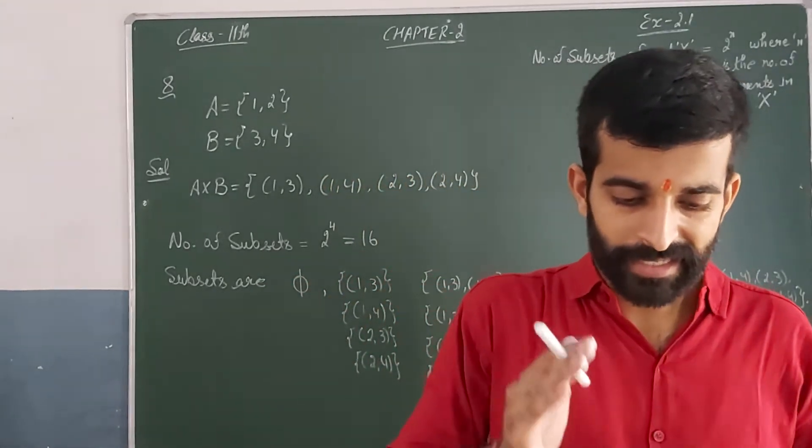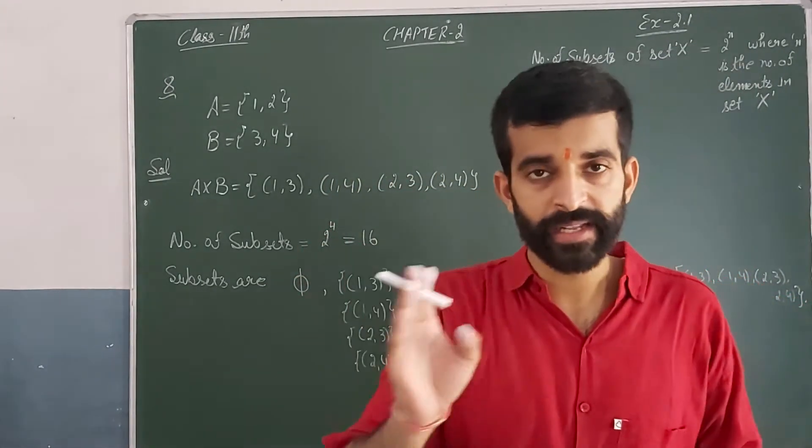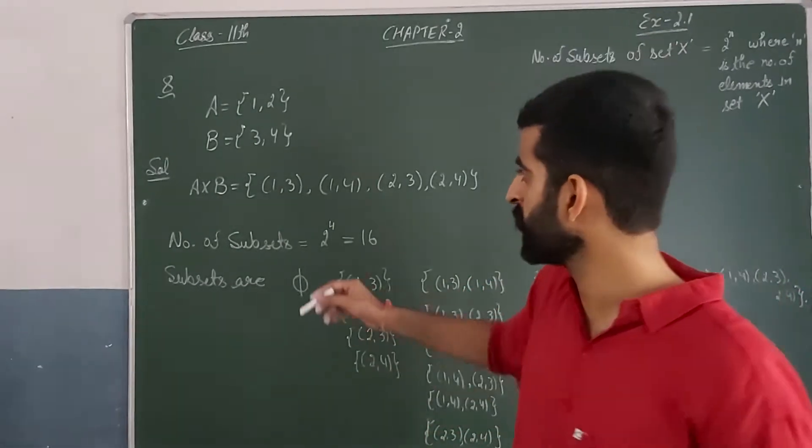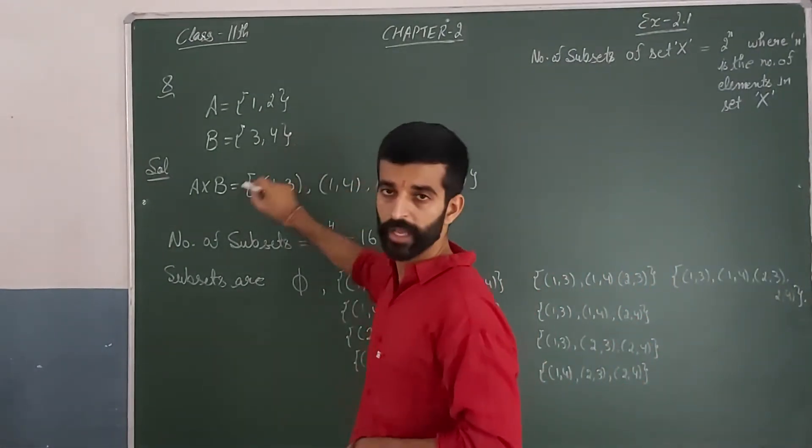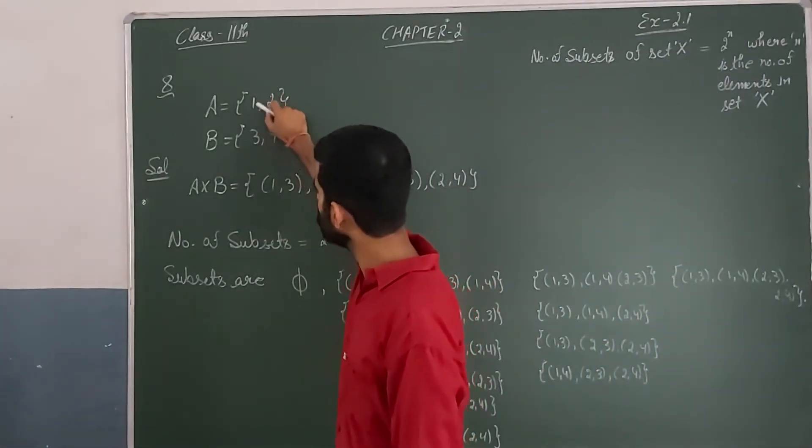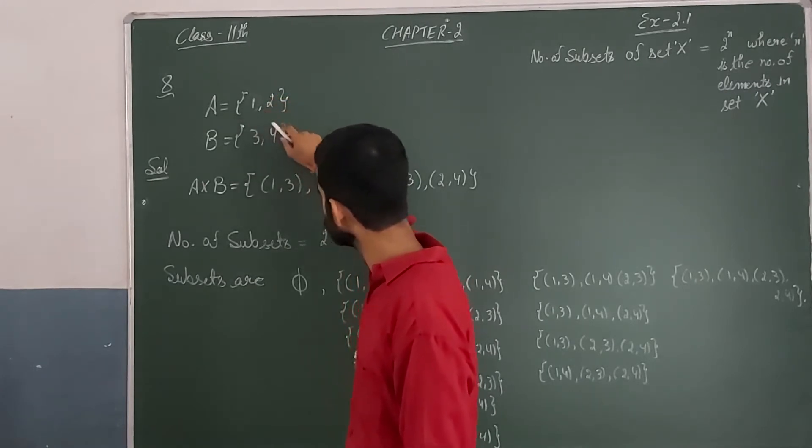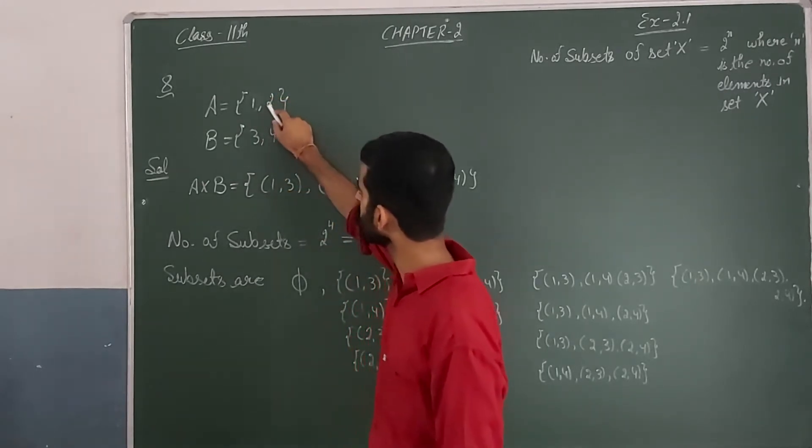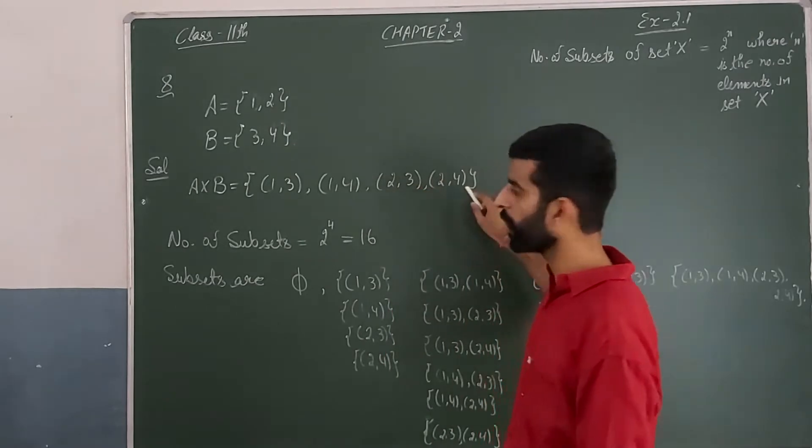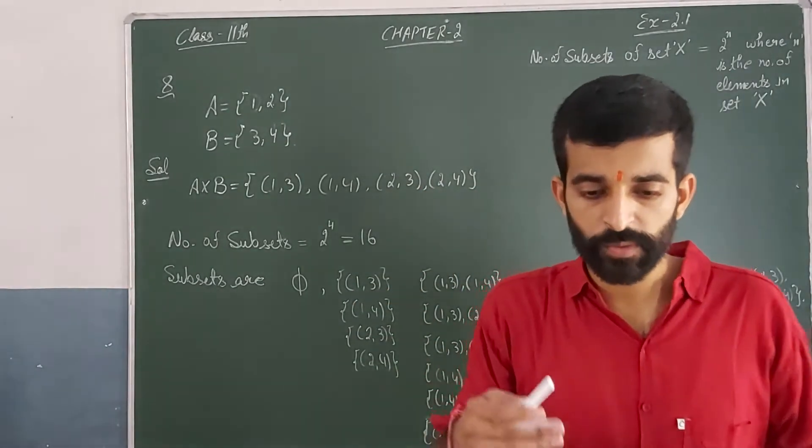This question is: let A and B be two sets, write A cross B. Now you have A cross B. How to find this? A element is equal to this, then this equals A cross B.